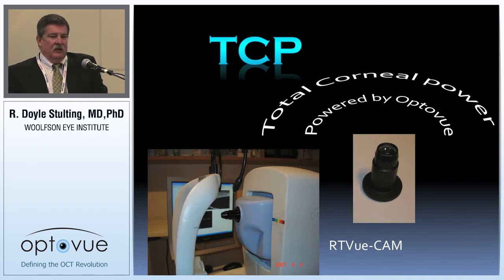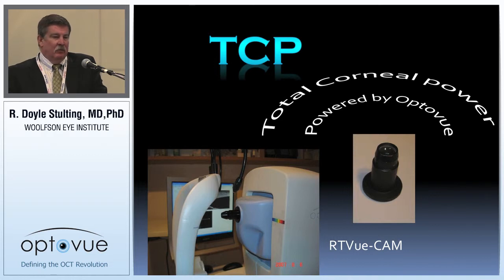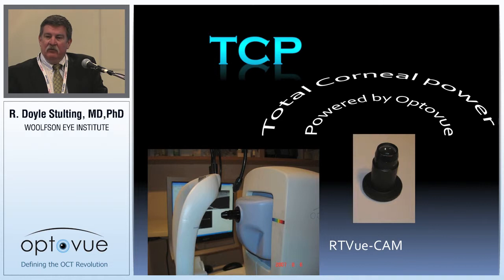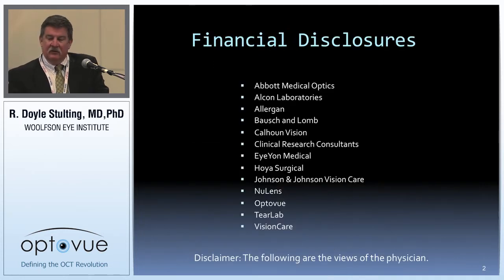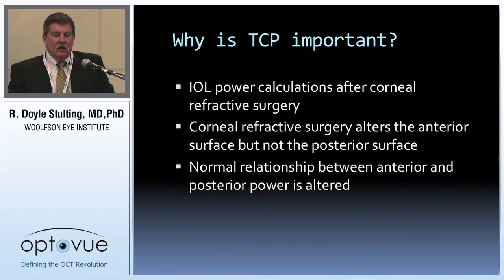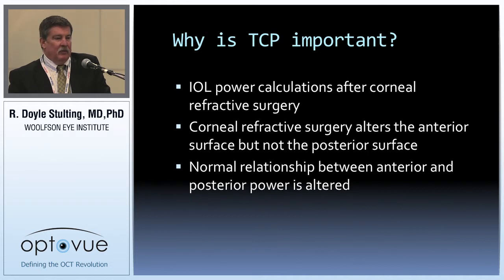Most of you know that the cornea has two refractive surfaces: the anterior surface and the posterior surface. Traditionally, we used keratometers to measure corneal power. The keratometer made a couple of assumptions — one is that the corneal power was consistent across the surface, so that measuring at a diameter of about three millimeters could be generalized to the entire cornea. That measures the anterior corneal power, and we have to make assumptions about the posterior corneal power and the distribution of the curvature.